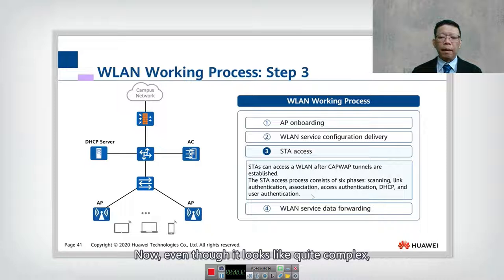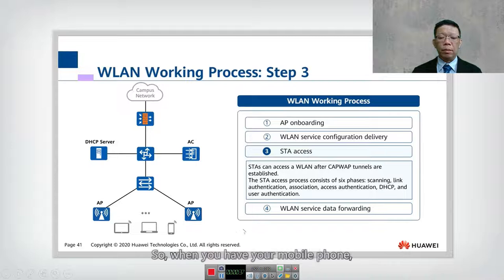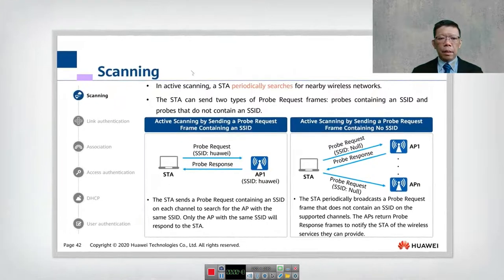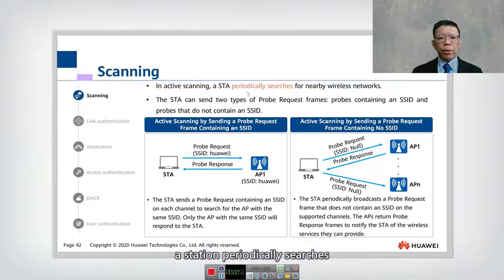Even though it looks quite complex, this is something you do every day in a seamless way. When you have your mobile, you look for your SSID, you see the SSID, you associate, and you key in the password — that's all. Now let's look at STA access scanning. In active scanning, a station periodically searches for nearby wireless networks.